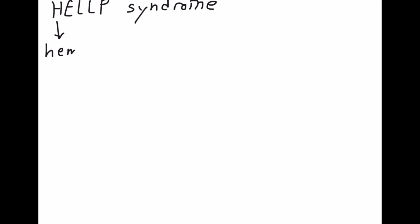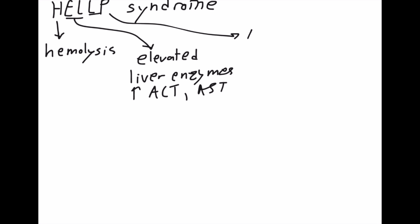HELLP syndrome is classified by a triad of three things, with the first being hemolysis. The second, the EL in HELLP, stands for elevated liver enzymes, specifically ALT and AST. LP stands for low platelets that you'll see in the mother.